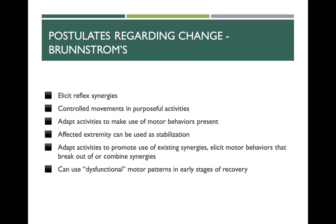Some postulates regarding change in Brunstrom's approach — these are intervention and treatment ideas. We want to elicit reflex synergies as the basis to progressively learn mature voluntary movement, like normal development. We want to control movements in purposeful activities, as motor learning is enhanced through normal activity. We also want to adapt activities to make use of motor behaviors that are present — controlling synergies and movements, and deviating from synergies to accomplish volitional control of movement.